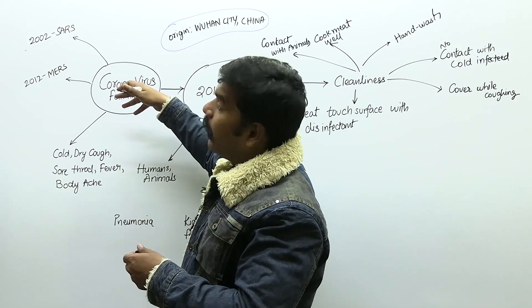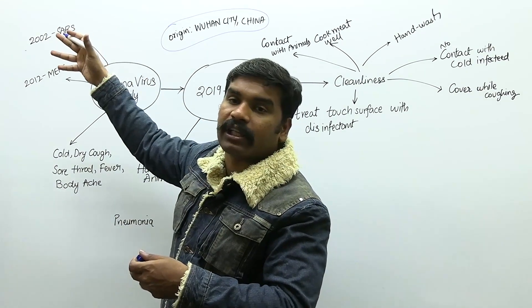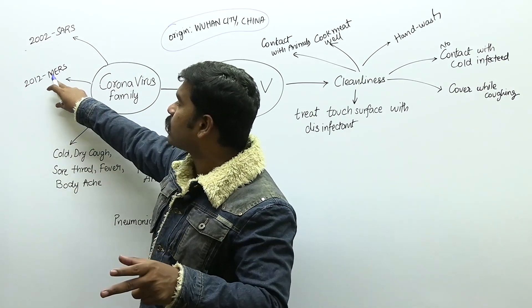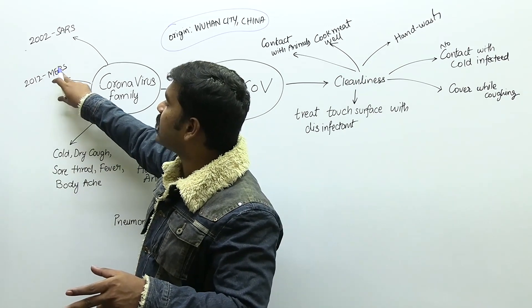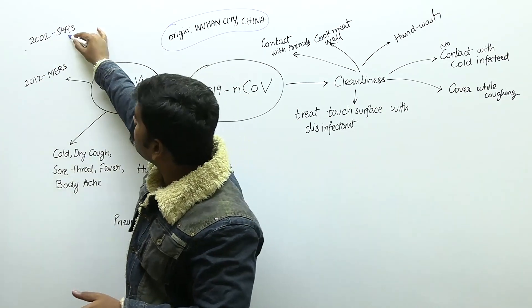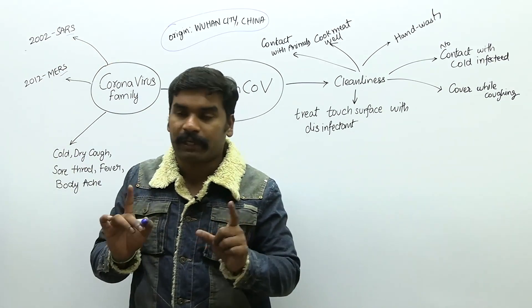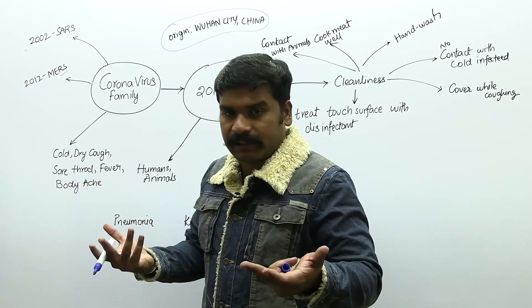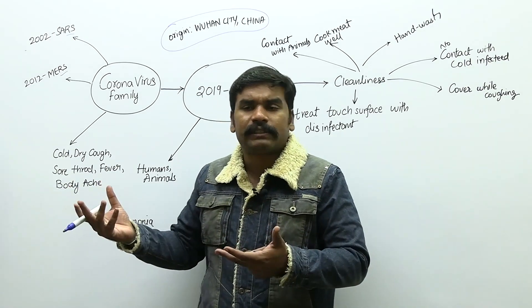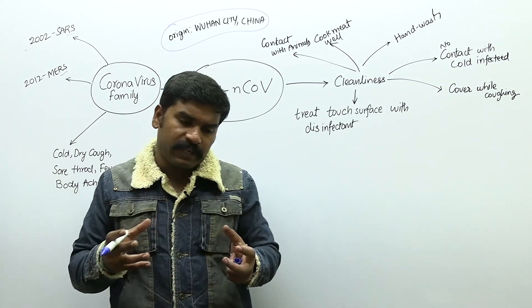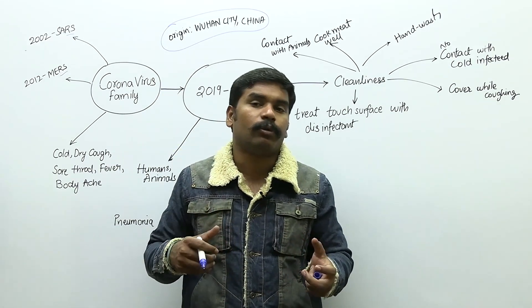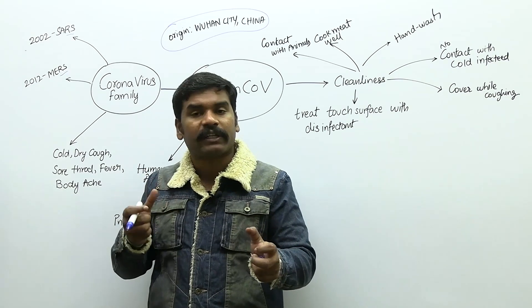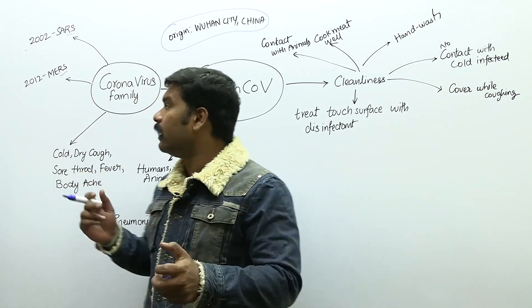Again in the coronavirus family, there was another outbreak called MERS — Middle East Respiratory Syndrome. If you observe both, one thing is common: RS, respiratory syndrome. Any virus in the coronavirus family will basically attack the respiratory system of the human body. Not just this coronavirus — anything attacking the respiratory system means your immune system is weak, and the respiratory system is most likely to get affected first.